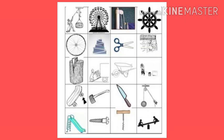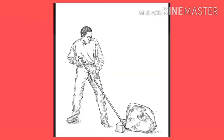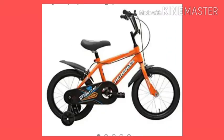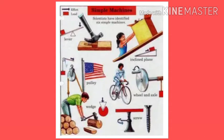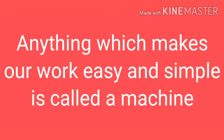We may take many live examples from our surroundings where we use machines. A spoon is a machine, a simple rod to shift a boulder from one place to another is also a machine, a bicycle is also a machine, a lever is also a machine. So a machine is a substance which makes our work easy and simple.